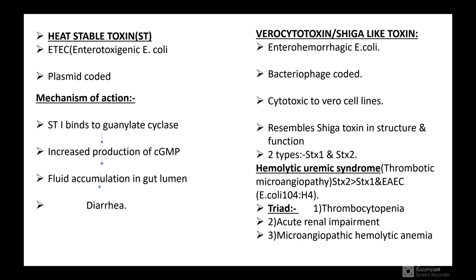The verocytotoxin or Shiga-like toxin is secreted by enterohemorrhagic E. coli. It is bacteriophage coded and is cytotoxic to Vero cell lines. It resembles Shiga toxin in structure and function. There are two types: Shiga-like toxin 1 and Shiga-like toxin 2. It causes hemolytic uremic syndrome, which is a thrombotic microangiopathy, caused more commonly by Shiga-like toxin 2 than toxin 1.